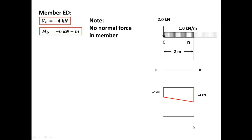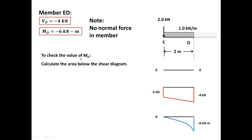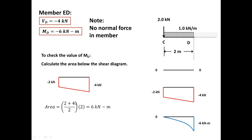For the moment: at the tip it's zero, and at point D it's negative six kilonewton-meters — so it's zero here, curves like that, and reaches negative six. Let's verify by calculating the area of this shape: (2 plus 4) over 2, taking the average, then multiplied by the distance of 2. That gives (2 plus 4) divided by 2, times 2, equals 6. So we are correct.